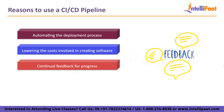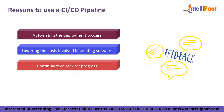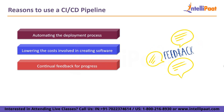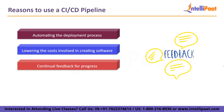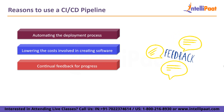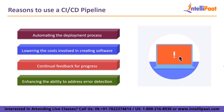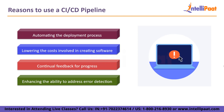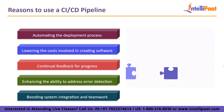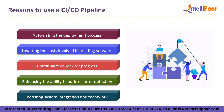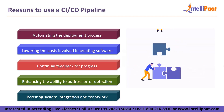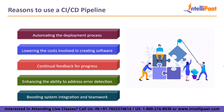Continual feedback for progress: a continuous cycle of build, test and deployment is the CICD pipeline. Developers can swiftly act on feedback after each test of their code to make it better. Enhancing the ability to address error detection early in the development process: every time a new version of the code is developed in continuous integration, testing is automated to look for integration problems. The earlier in the pipeline that these problems develop, the easier they are to correct. Lastly, boosting system integration and teamwork — everyone on the team has the ability to modify code, react to feedback and solve problems as they arise.